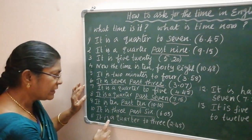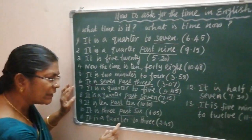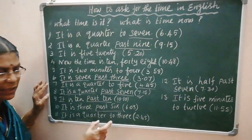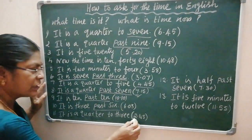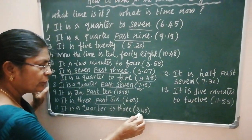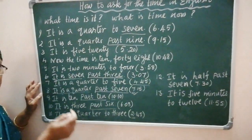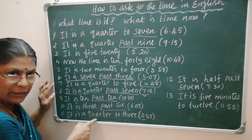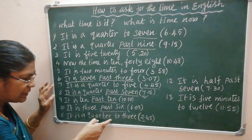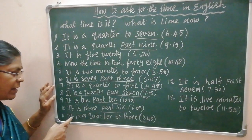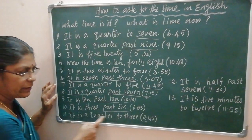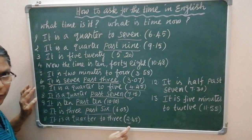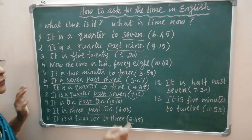Next, it is a quarter to three. So you are not yet reaching three — it is only two. For reaching three, it is a quarter. Quarter means 15 minutes. It is quarter to three — that means the time is 2:45.